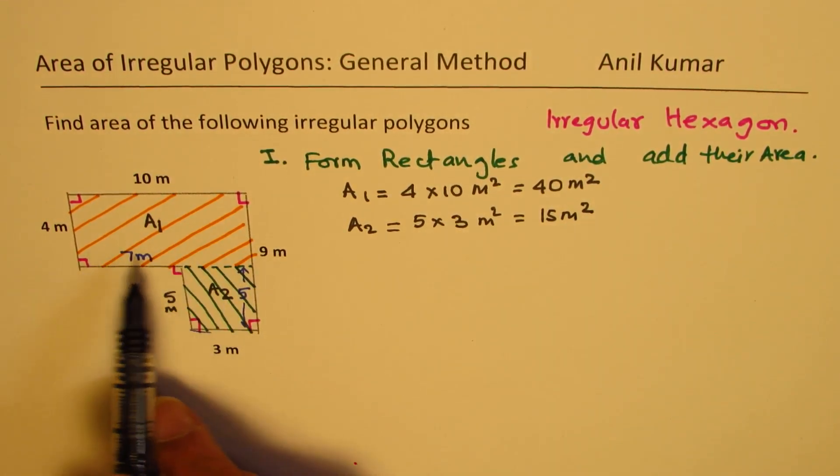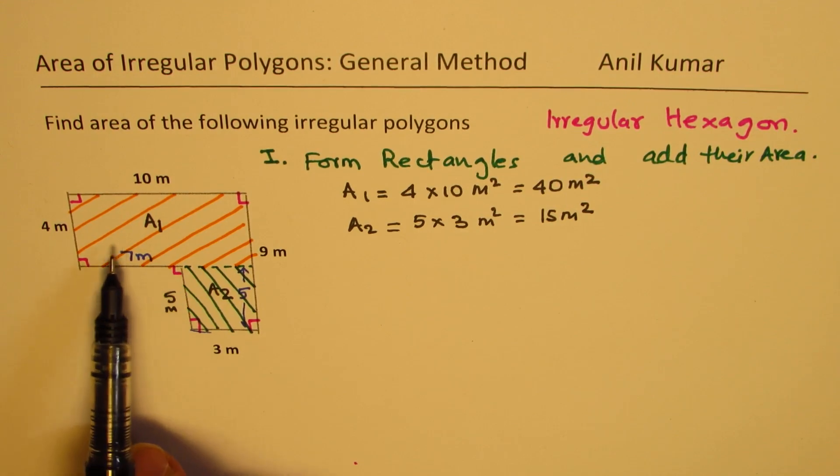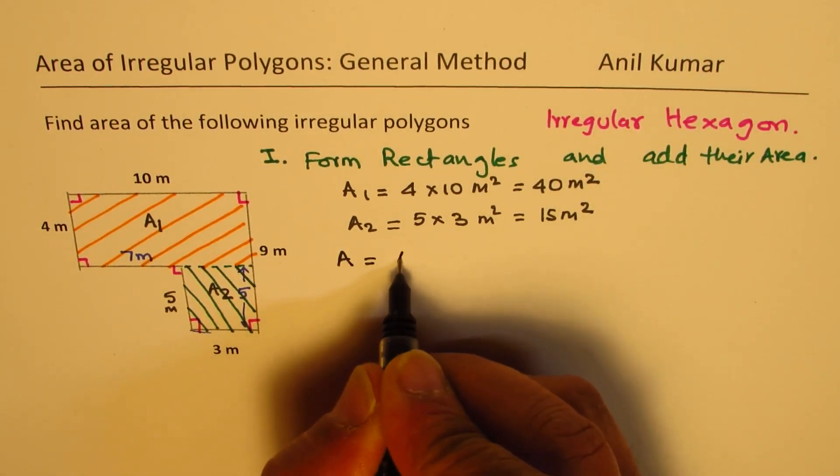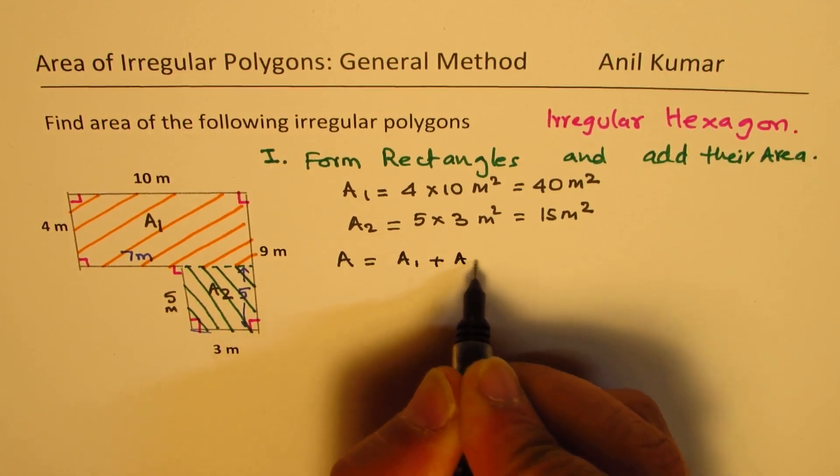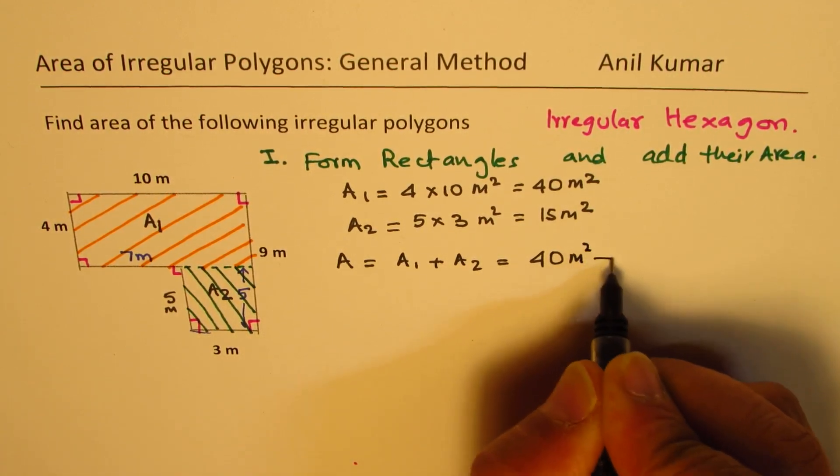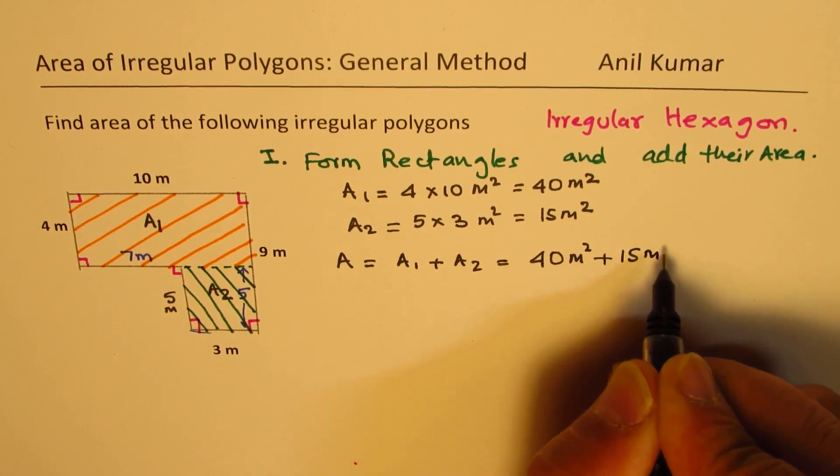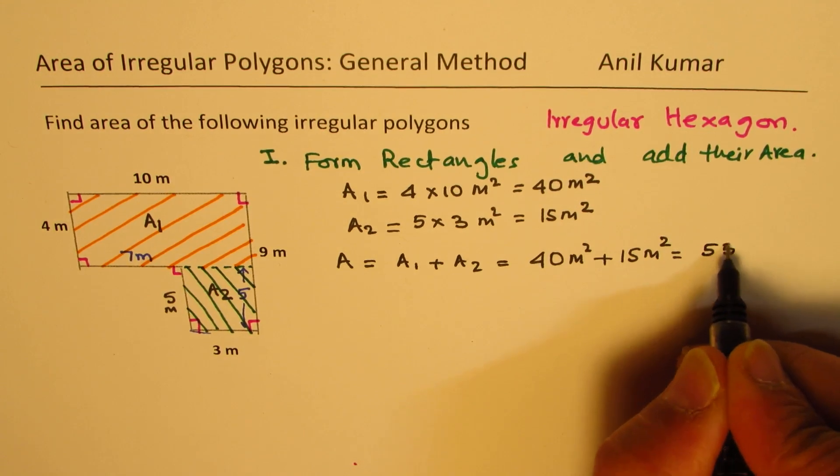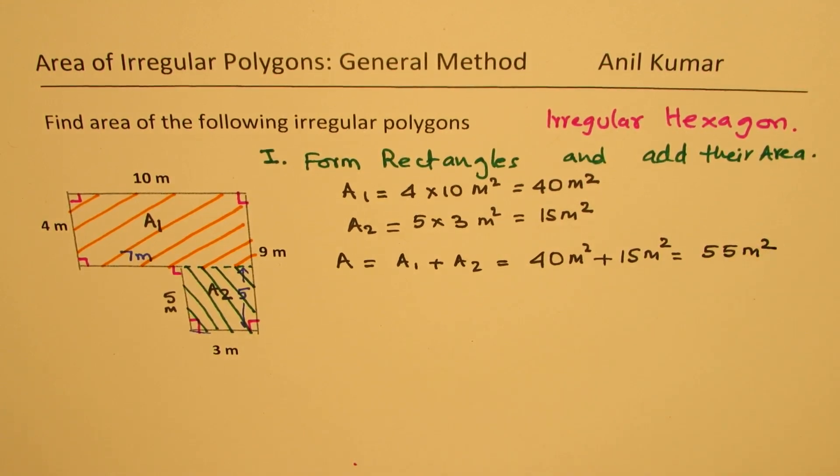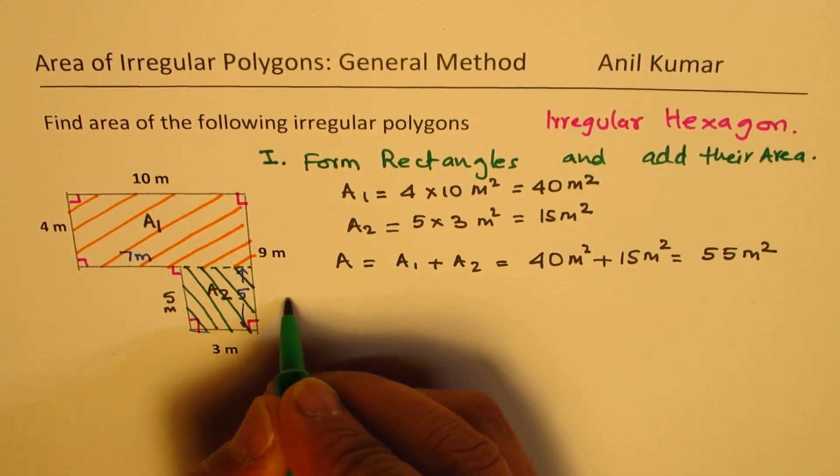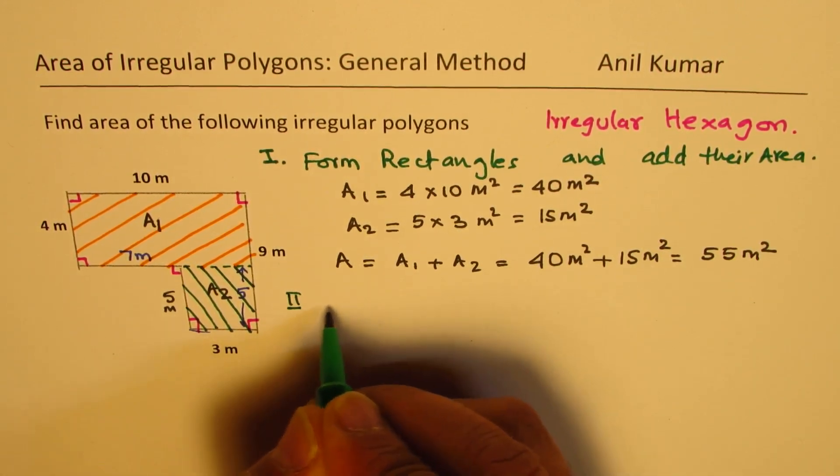So clearly, we can get the area of the whole figure as area equals to sum of these two areas, A1 plus A2, which is 40 meters squared plus 15 meters squared. And that gives us 55 meters squared. So this is one of our methods. So we'll call this as our first method. Now we'll do the same example with the second method.